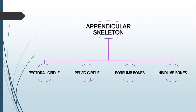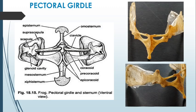Moving on to the pectoral girdle - it is found in the thoracic region or shoulder region, which provides attachment for muscles and bones of the forelimb. In most higher organisms, the pectoral girdle has a partner in a sternum, and this sternum has ribs. But in the case of the frog, the sternum does not have any ribs.